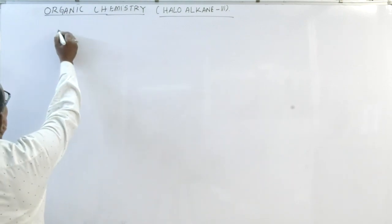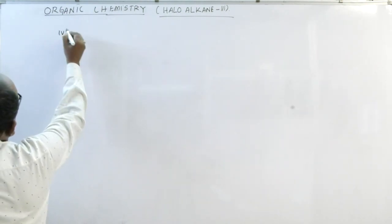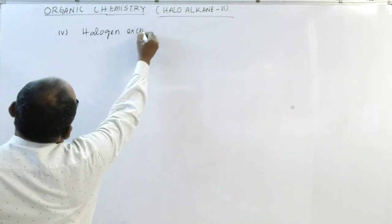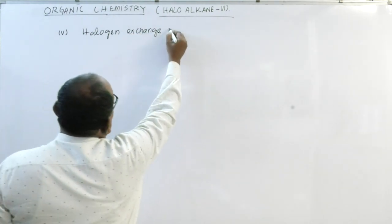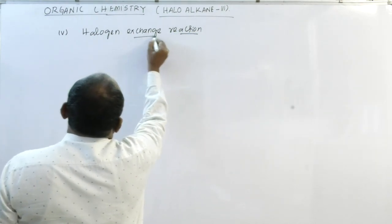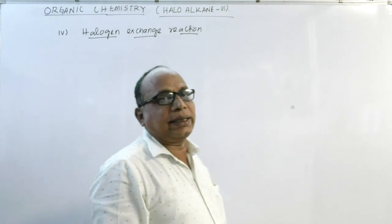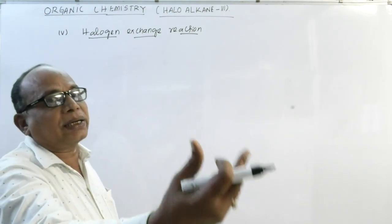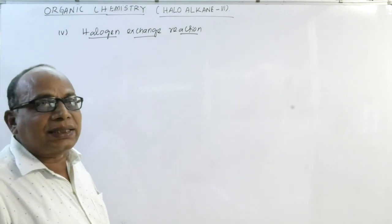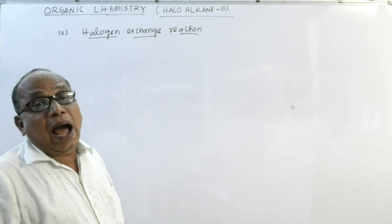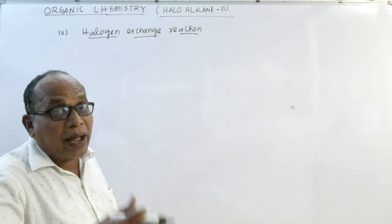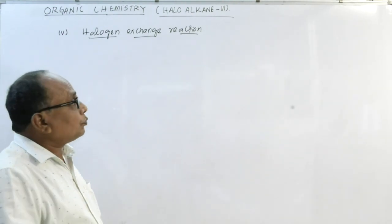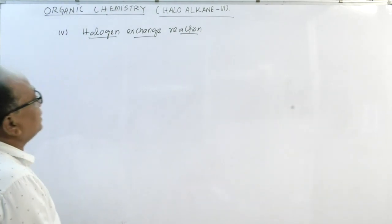Today we will discuss method number four — the halogen exchange reaction. In the halogen exchange reaction, we can convert one type of alkyl halide to another by exchanging the halogen atom. Specifically, alkyl chloride or alkyl bromide can be easily converted into alkyl iodide.